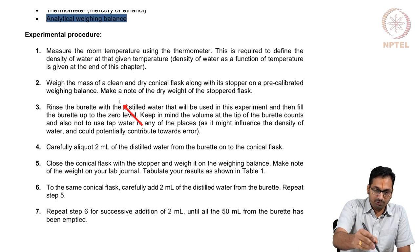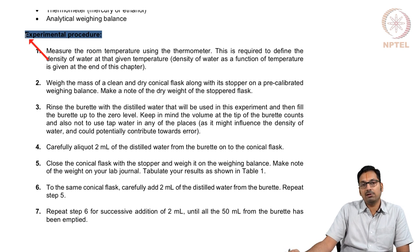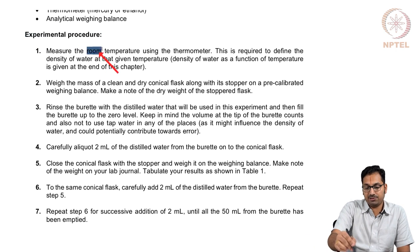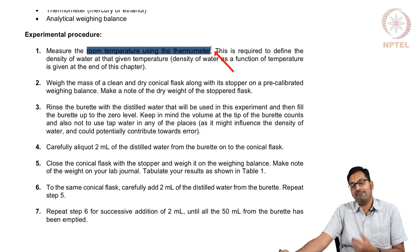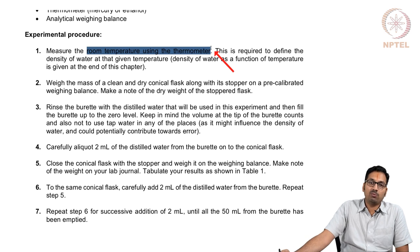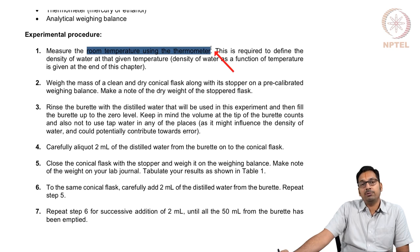Now let us look at the experimental procedure — it is a relatively simple procedure. The first step is to measure room temperature with a thermometer. This is required because you have water in your burette which will be aliquoted out into the conical flask. If you add a known amount of water and measure how much you have added, this helps you understand the accuracy that comes out of the burette.